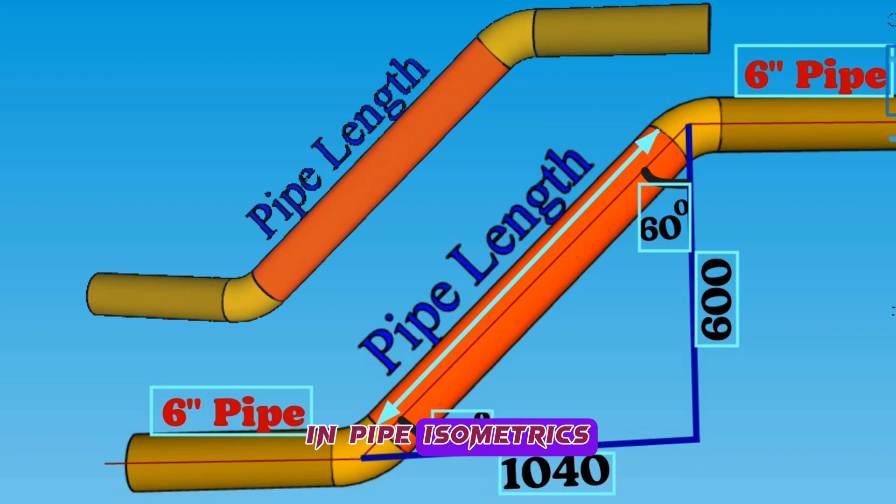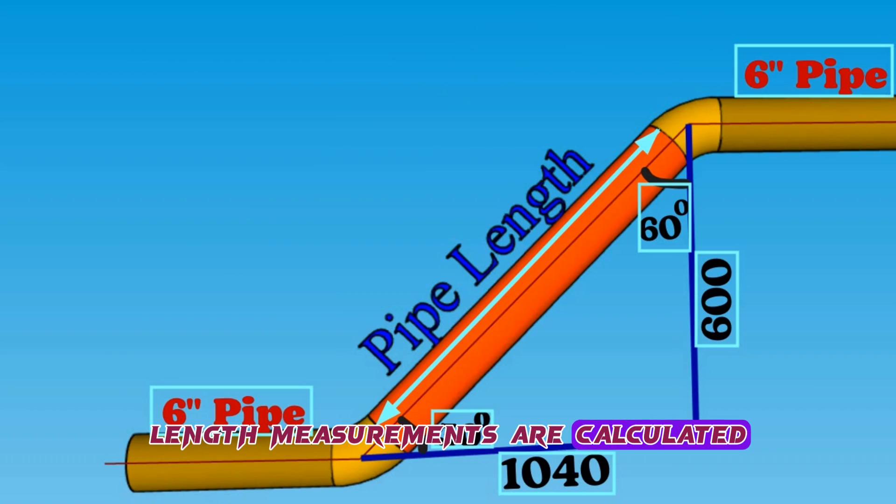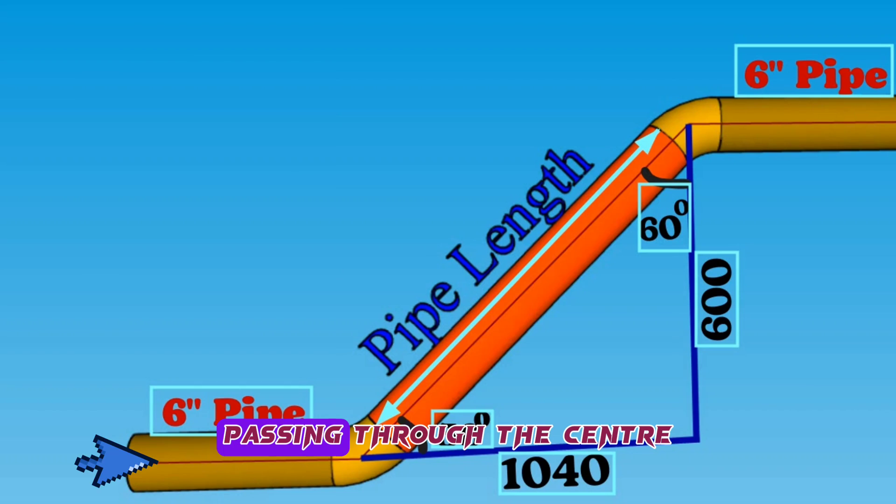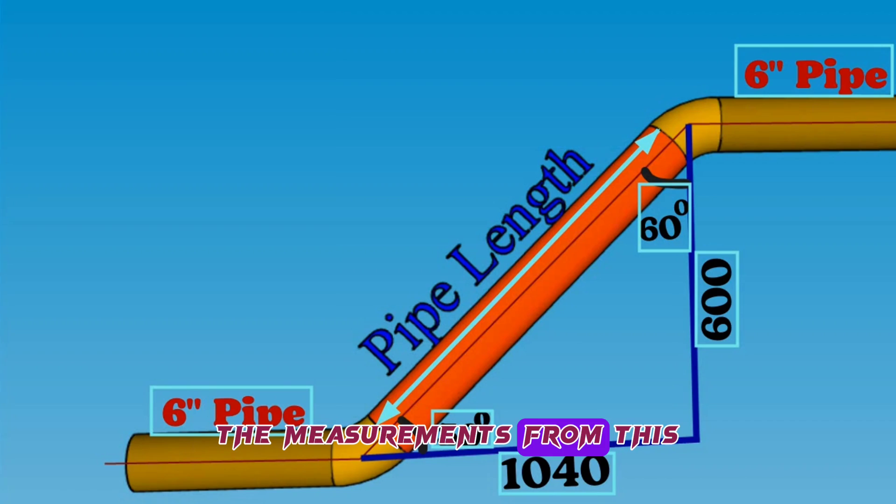In pipe isometrics, length measurements are calculated from imaginary lines passing through the center of the pipes. This thin line you see is the imaginary line passing through the center of our 3D pipeline, and we will calculate the measurements from this imaginary line.